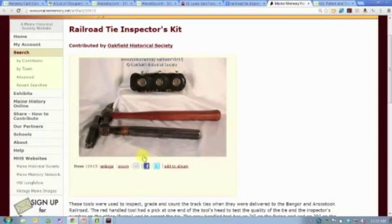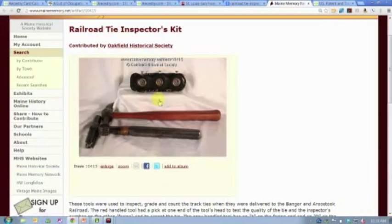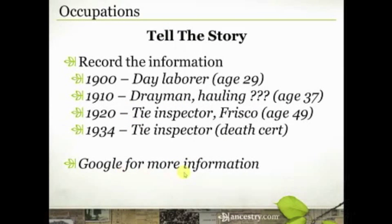After figuring out that Frisco meant the Frisco Railroad, I Googled 'railroad tie inspector' because that's actually what he did — he was inspecting railroad ties. I found a link to the Maine Memory Network for a 'railroad tie inspector's kit,' which took me to a small website from the Oakfield Historical Society. The image caption says this is a railroad tie inspector's kit from about 1920 — the right time period and right occupation. I love this because it helps me understand the kinds of tools he worked with every day in that occupation, which he was engaged in for at least 14 years that I have record of. I'll take that information and enter it into the notes in Family Tree Maker — what I discovered about the Frisco Railroad and what a tie inspector does. That records the story of what he did for a living.